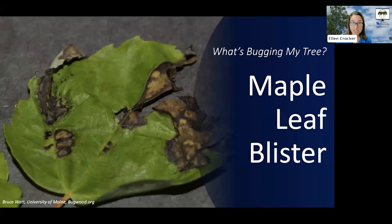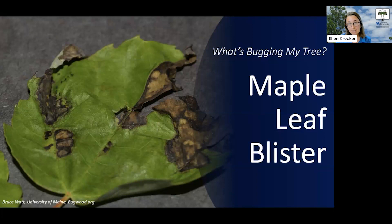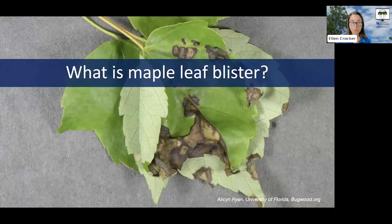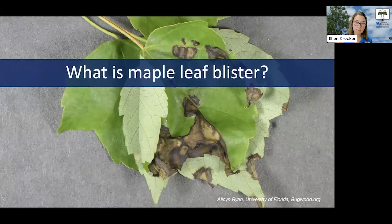In this edition of What's Bugging My Tree, I'm going to talk about maple leaf blister: what it looks like, potential lookalikes that are also occurring right now, and what this means for your trees. Maple leaf blister is caused by a fungus in the genus Tephrina, and the fungus overwinters in the bud scales of the tree and then infects new leaves as they emerge.